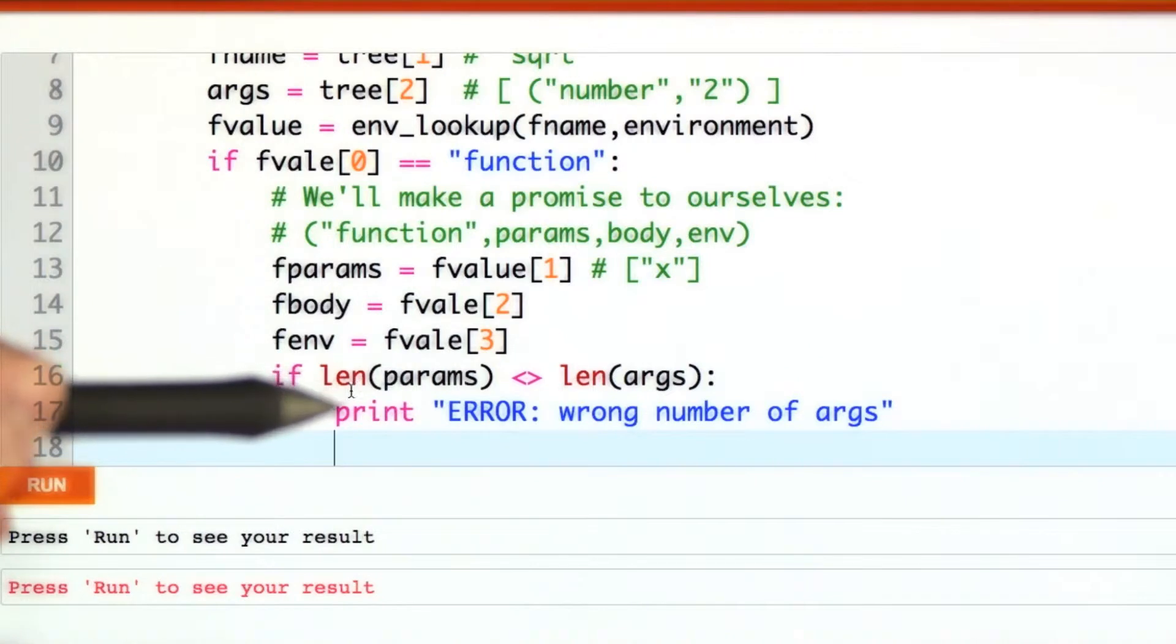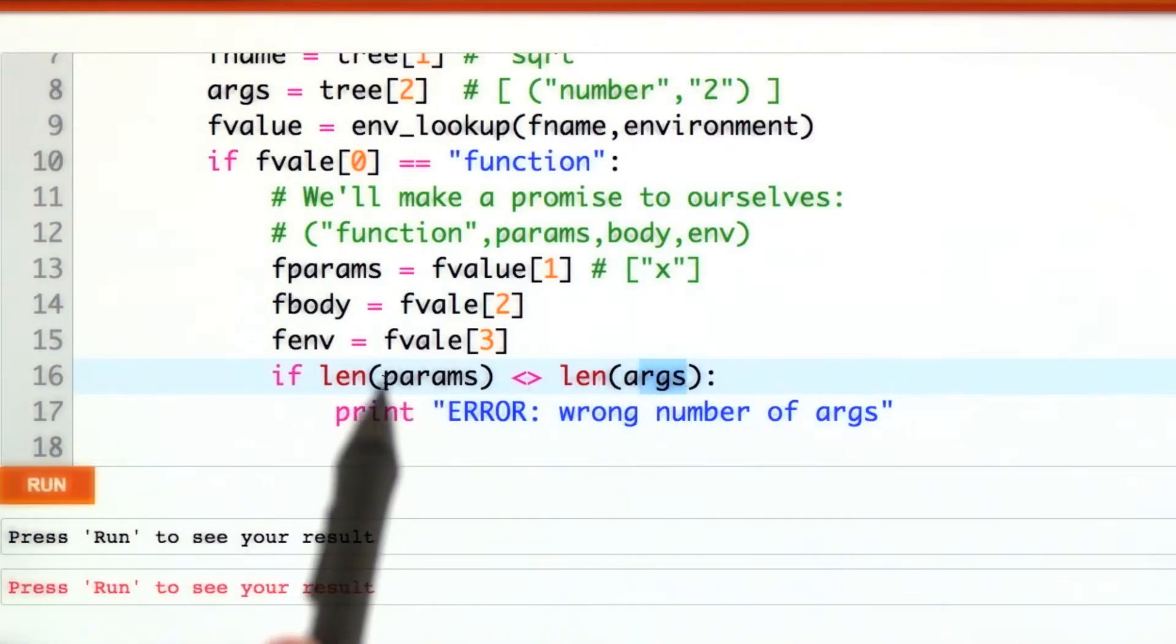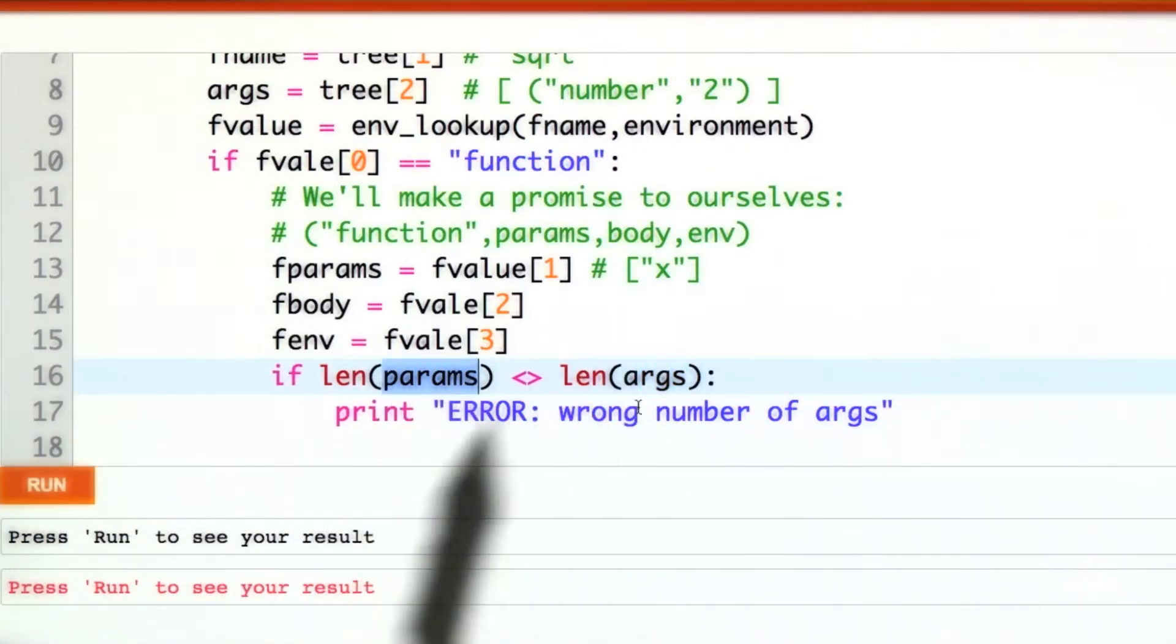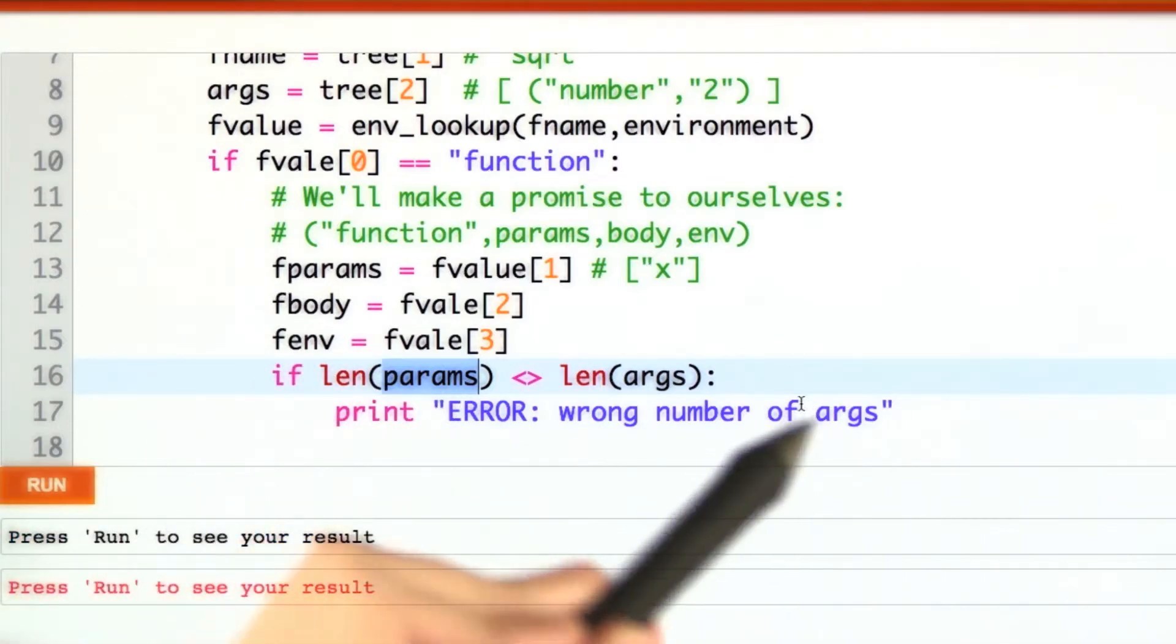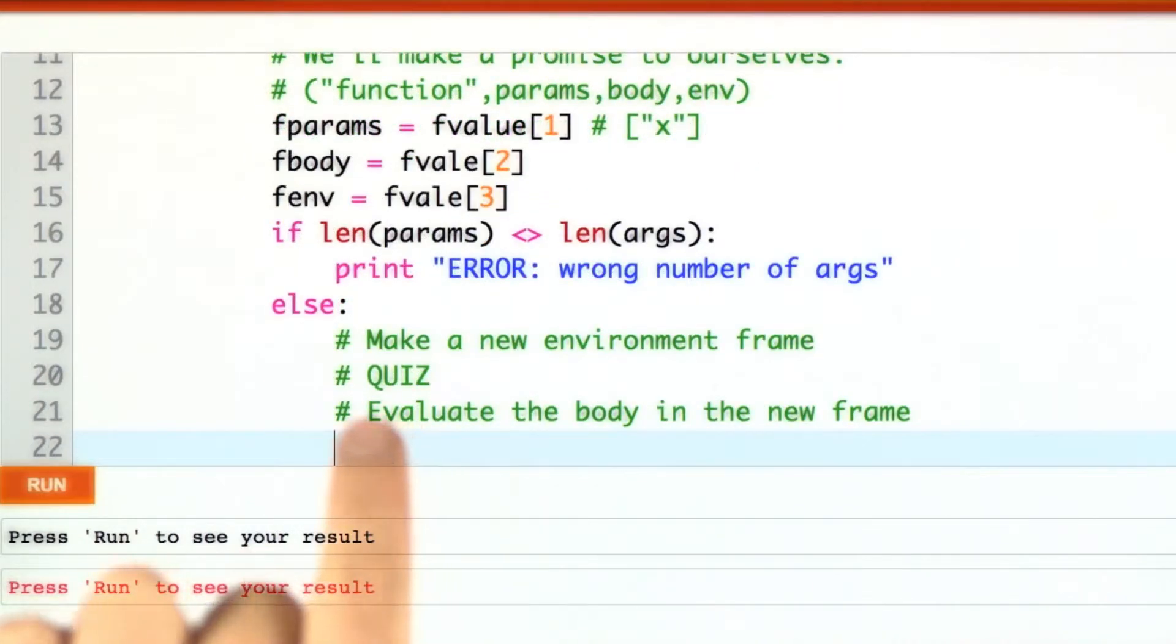One of the goals in our interpreter is to rule out bad code. One easy mistake to make is to pass in the wrong number of arguments, to have a different number of actual arguments and formal parameters. We'll just check for that now. They're both lists, compare their lengths. Otherwise, we have to make a new environment frame, which I'll leave for you to do, and then we want to evaluate the body in that new frame.